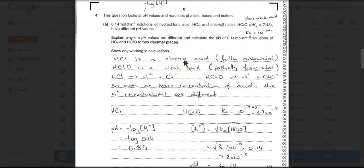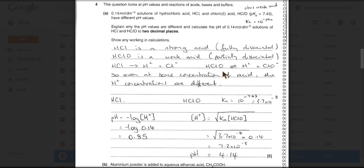HCl is a strong acid, that means it's fully dissociated. HClO is a weak acid, so partially dissociated. I've got a couple of equations there to show that. So HCl single arrow into its ions, HClO reversible arrows into its ions. So even though the concentration of the acids are the same, the H plus concentrations will be different. The H plus in HCl will be higher than the H plus concentration in HClO.